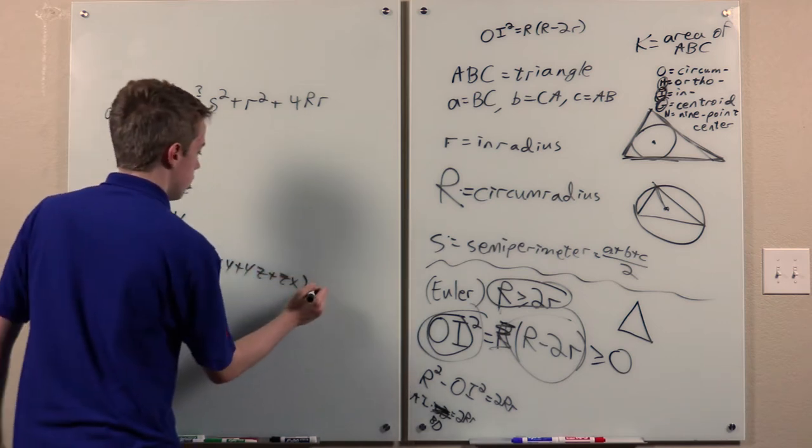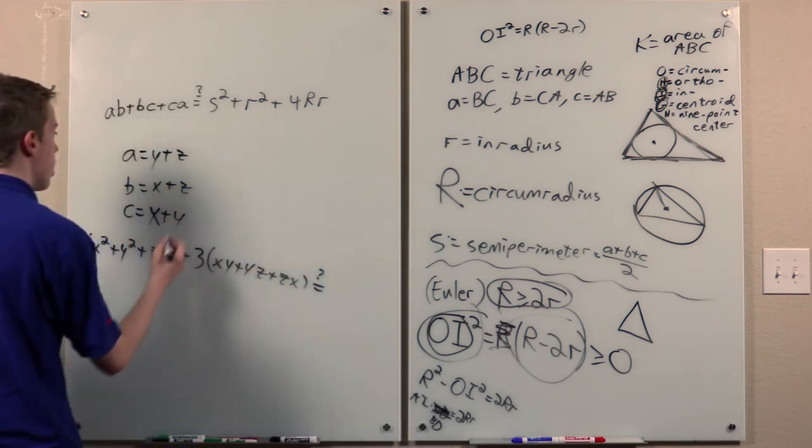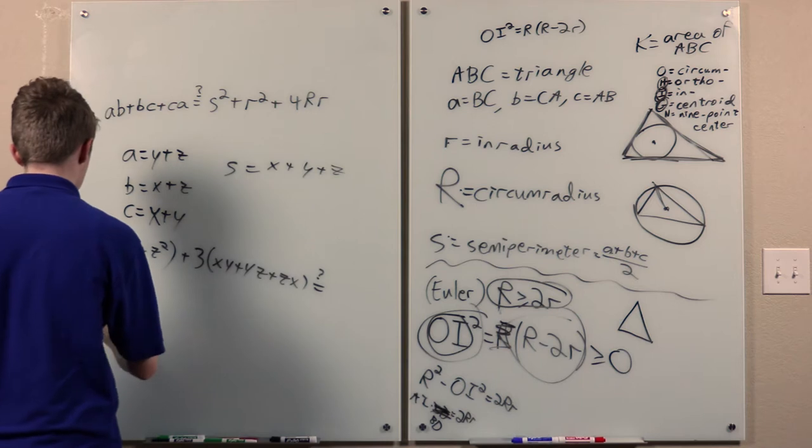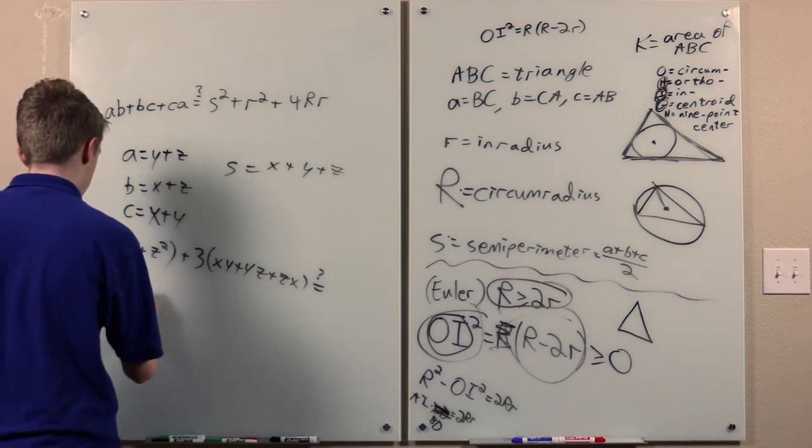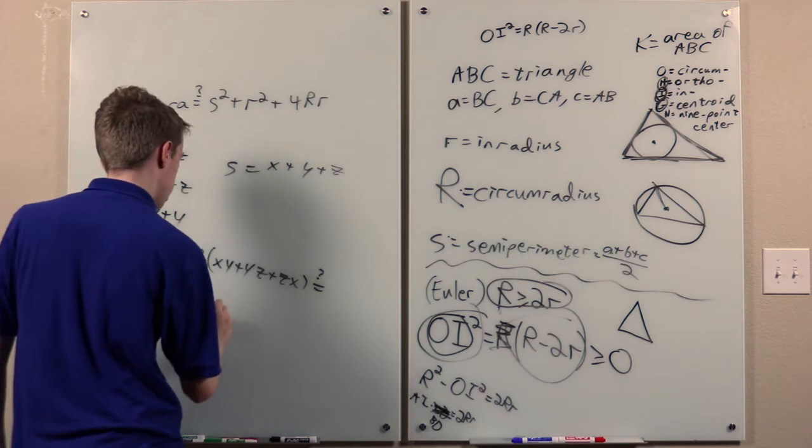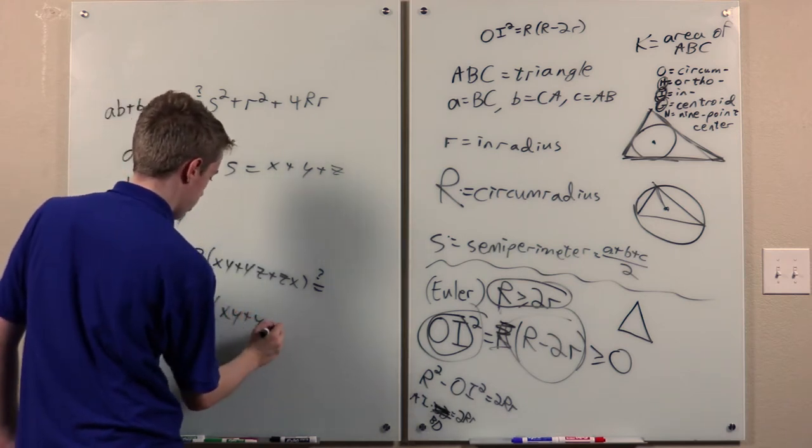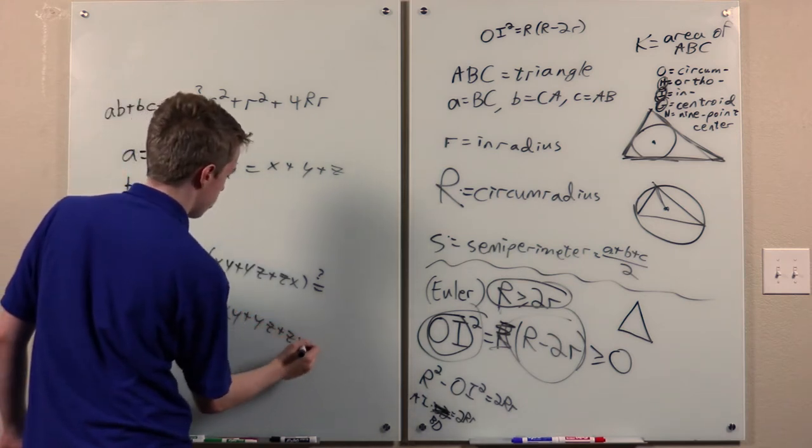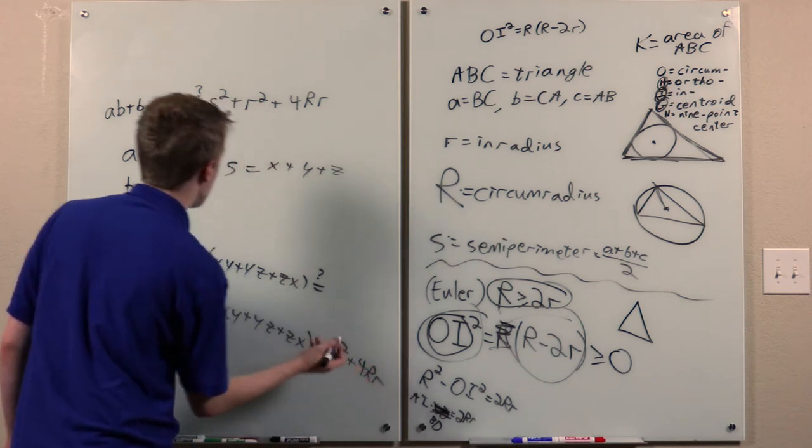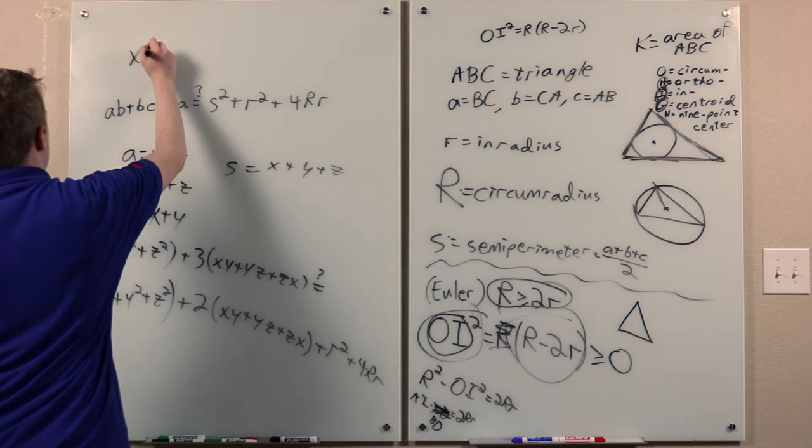And then the left-hand, no, s squared is this. So s squared is this. And then, of course, we still have this r squared plus 4rr term. So now what we want to prove becomes equivalent to proving this.